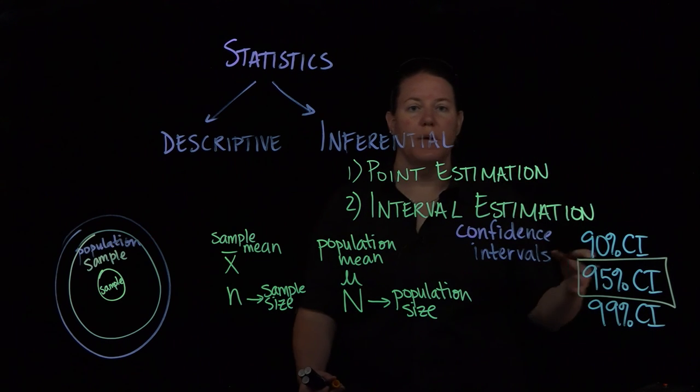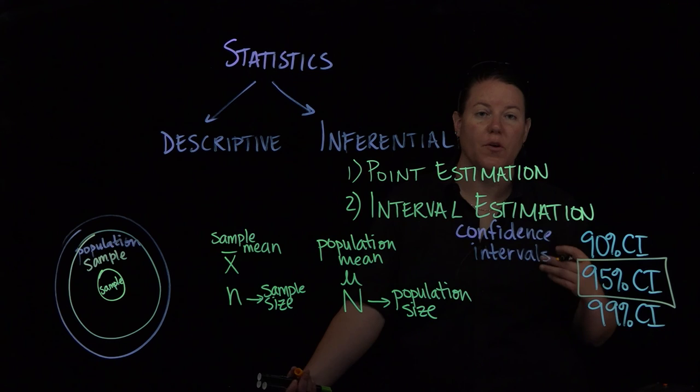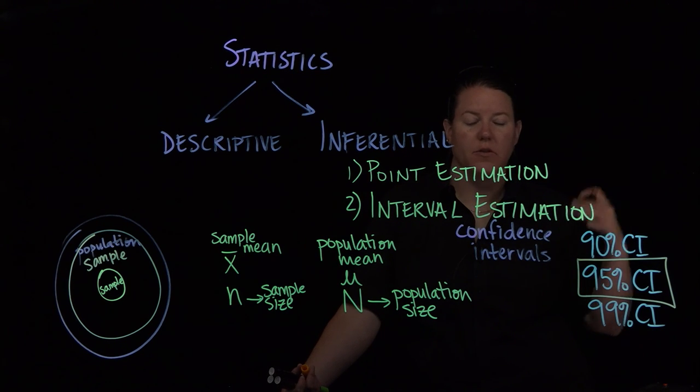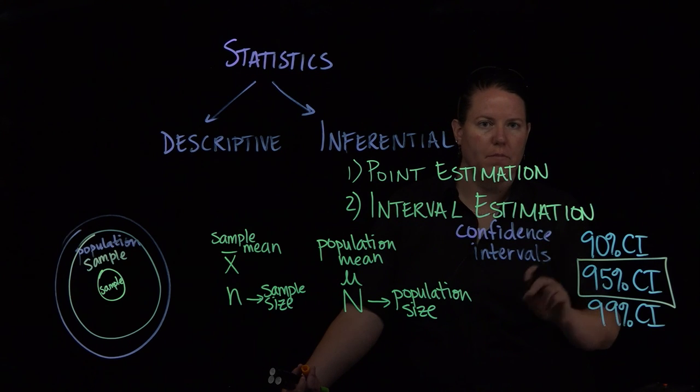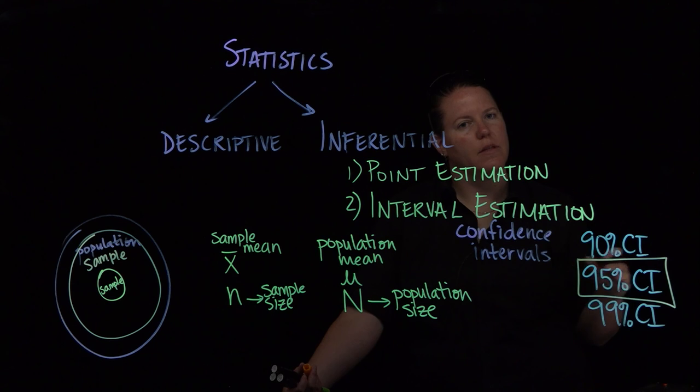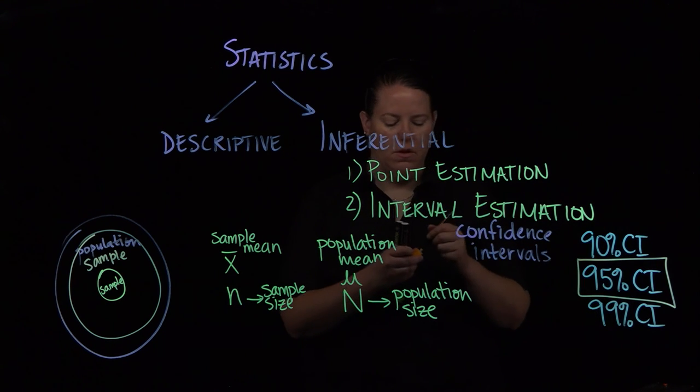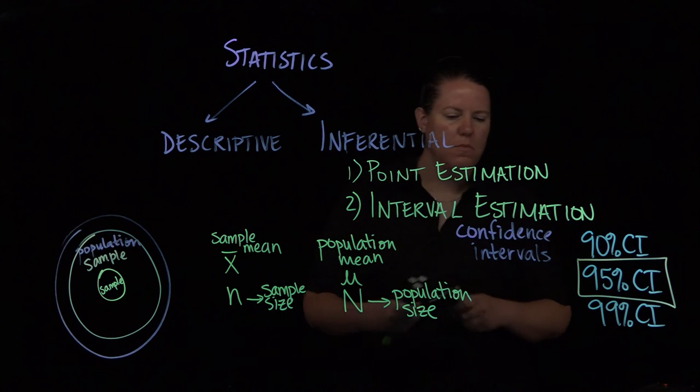So 90% confidence intervals, 95%, we typically go with the 95%. Which is where the p-value of 0.05 comes from. When you're doing the p-value of 0.05 and you're saying to yourself, is that good? Well, that comes from 95%. So you're saying, this is working for the majority of my population.